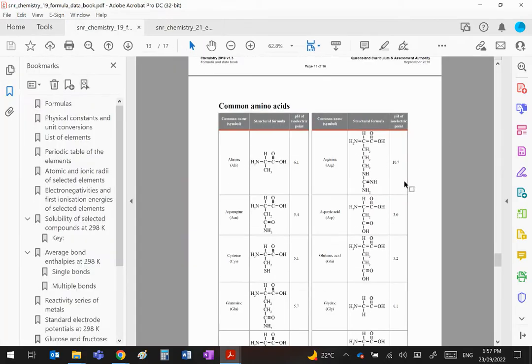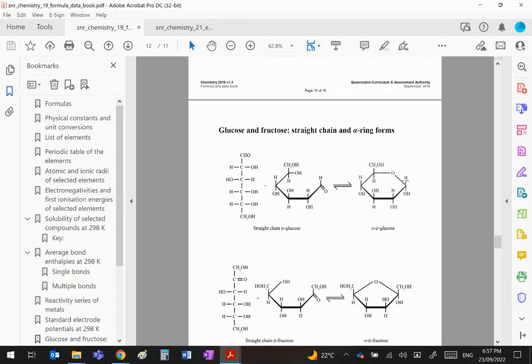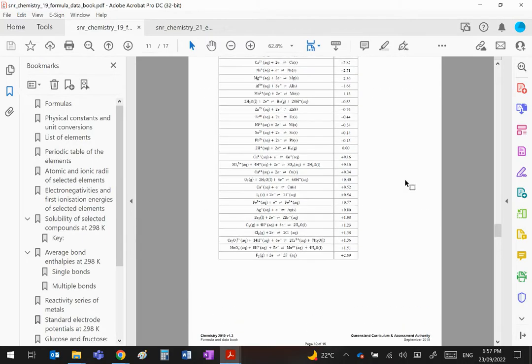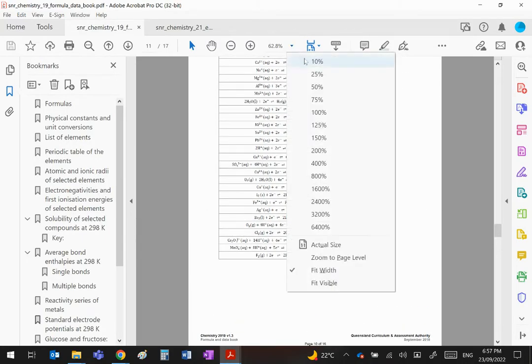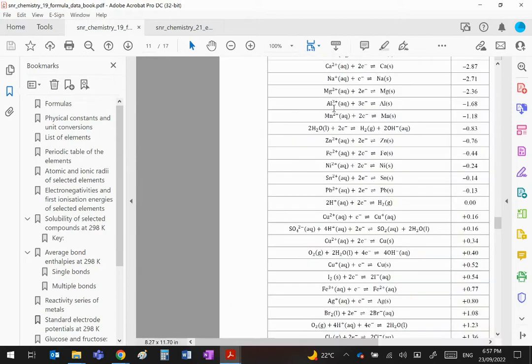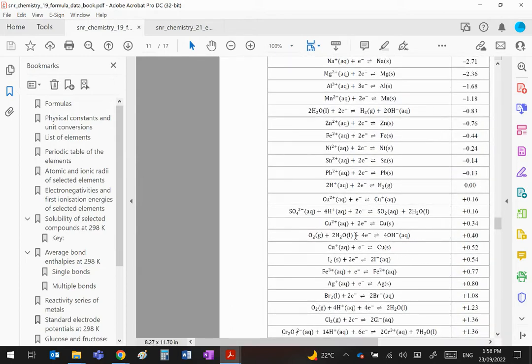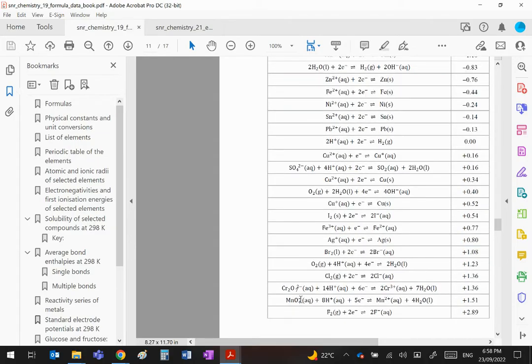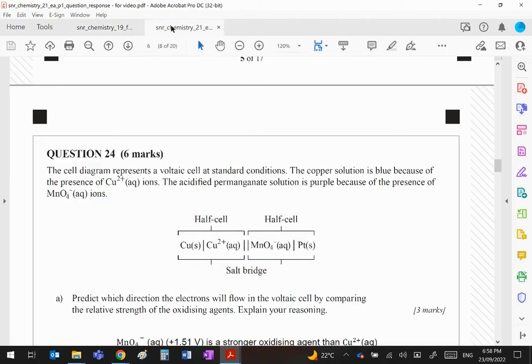In the data book, just to show you what two equations are: you have your copper/copper 2 plus which is that one there, the plus 0.34, and then the manganate/Mn2+ which is plus 1.51. Again, they should include both oxidizer and reducer, they haven't.